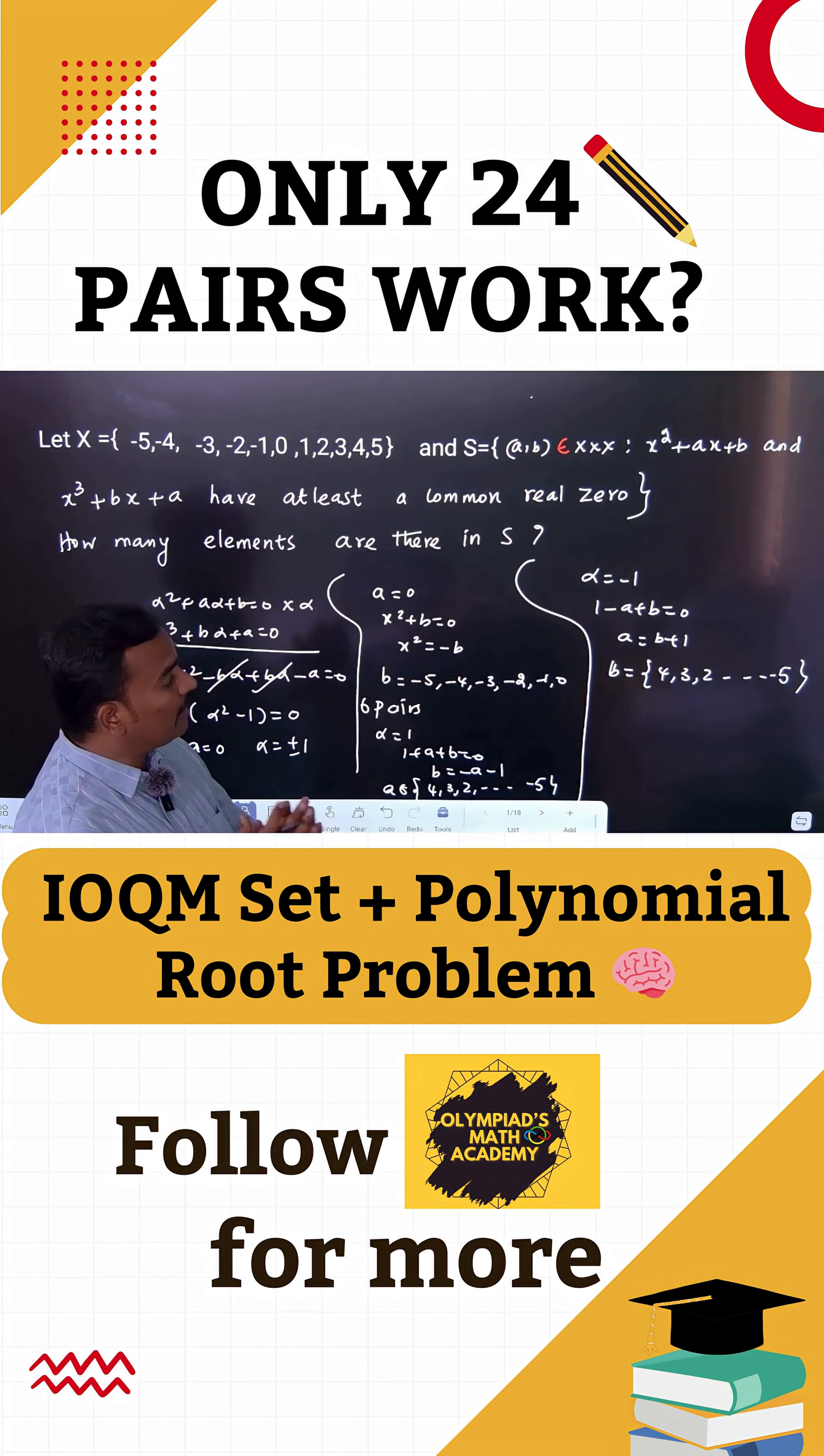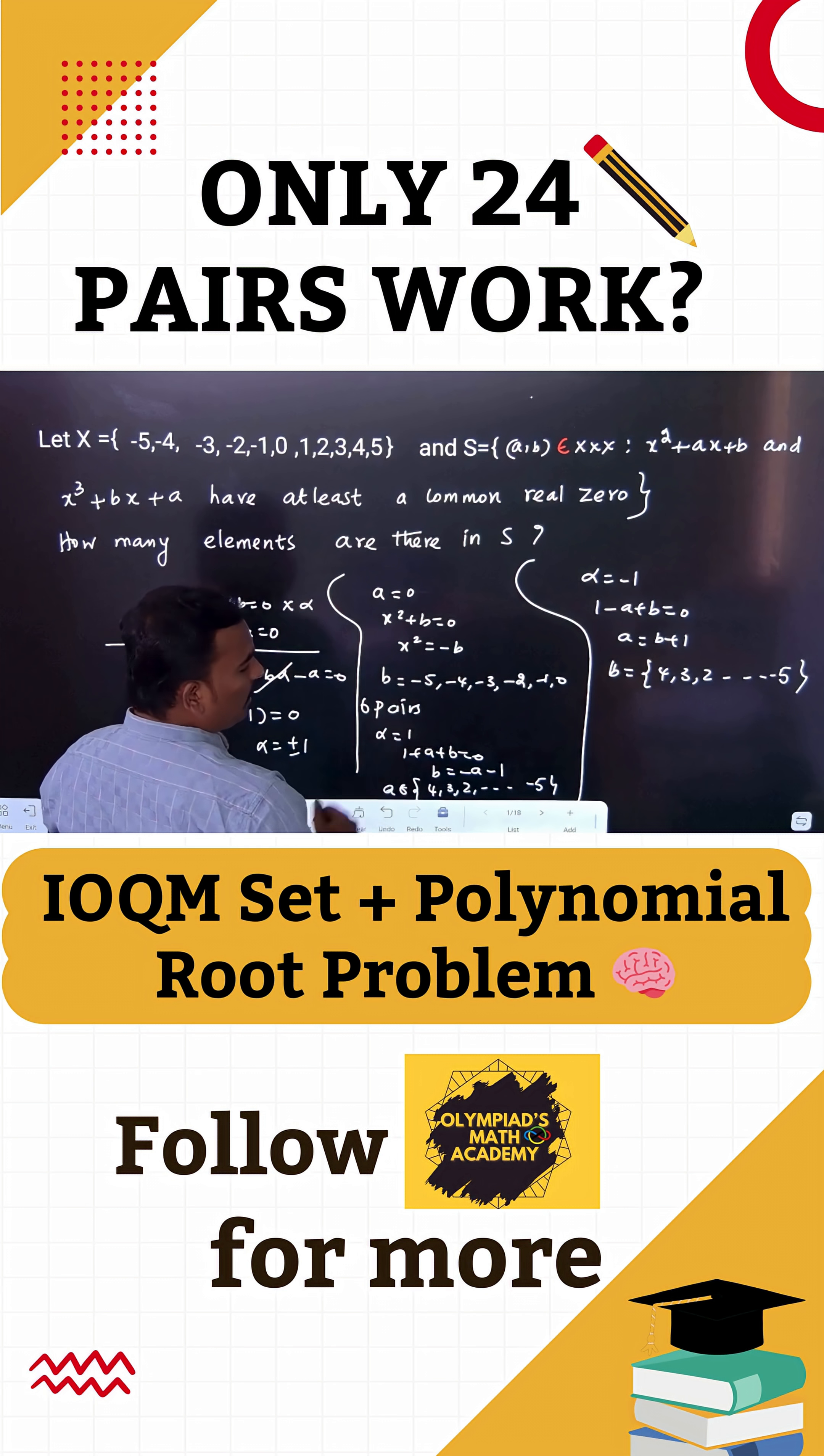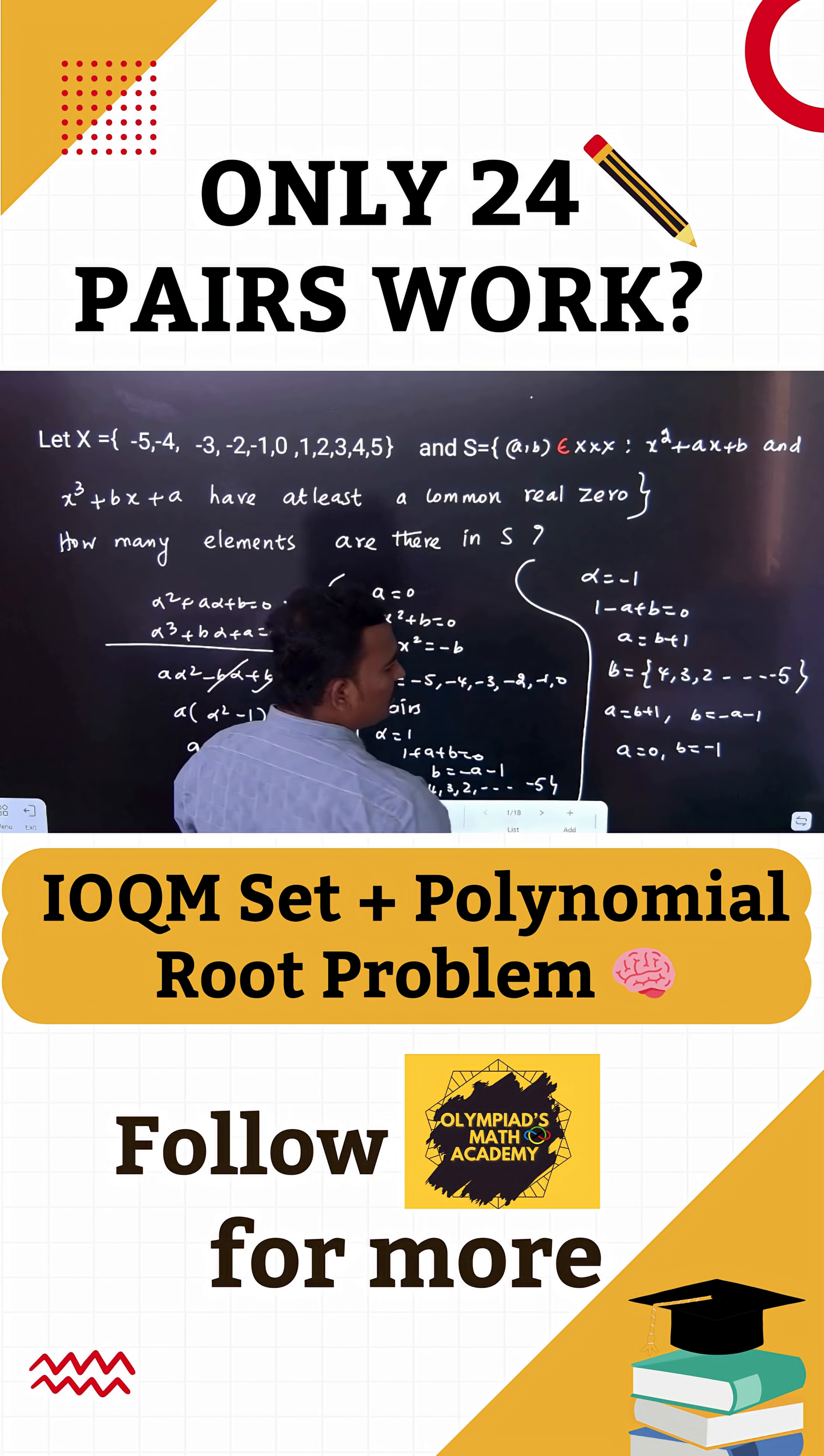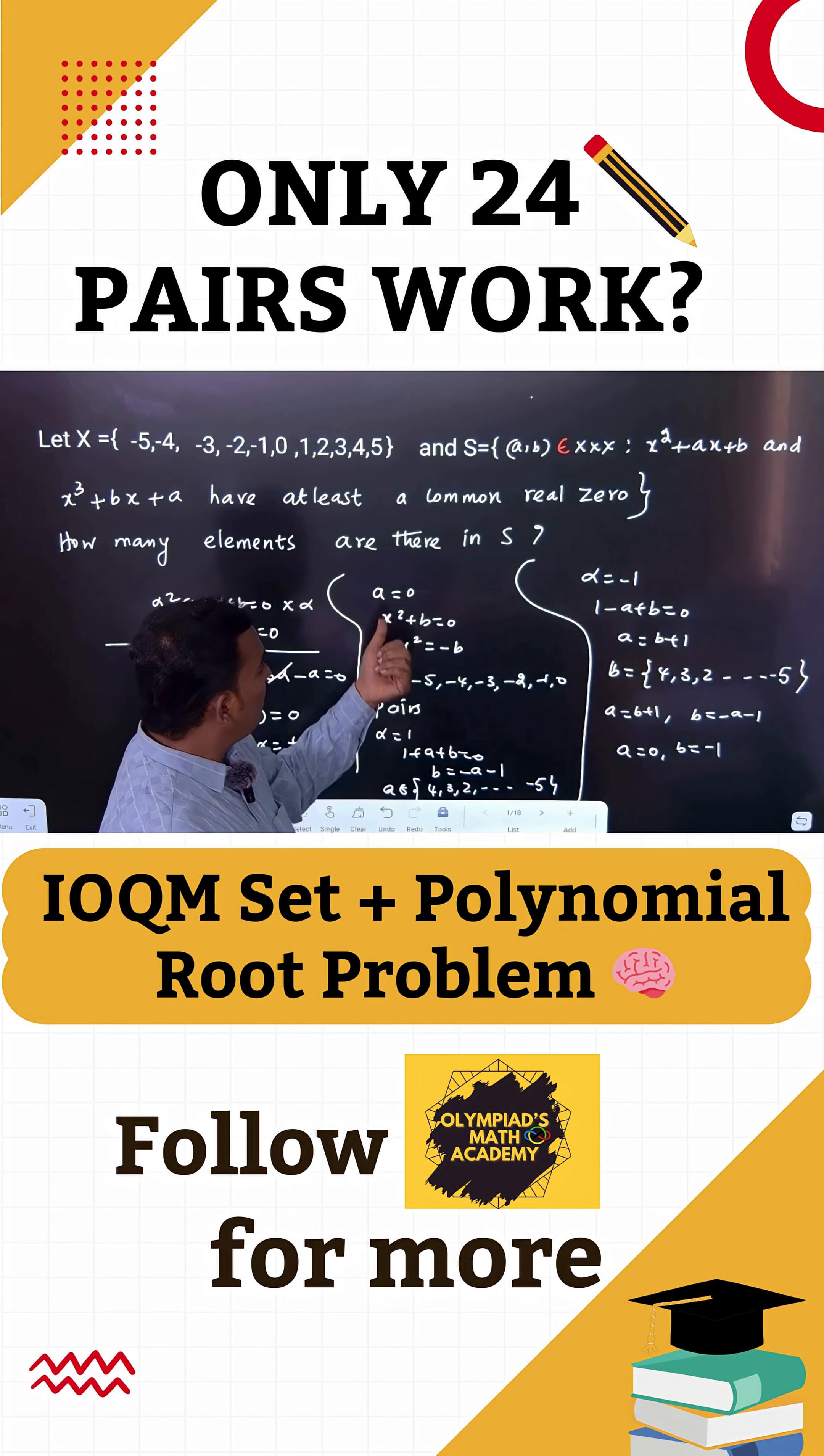How can we identify where the alpha equals -1 and alpha equals 1 cases overlap? A equals B plus 1 and B equals minus A minus 1. You can equate this and find A equals 0, B equals -1. So we already included (0, -1) when A equals 0, and (0, -1) is also there.